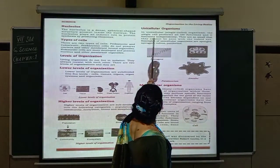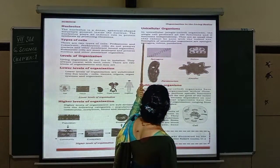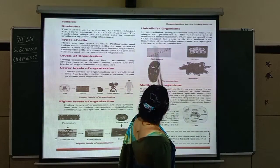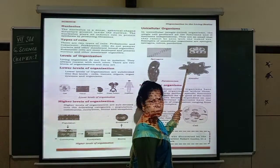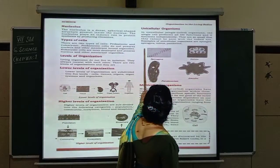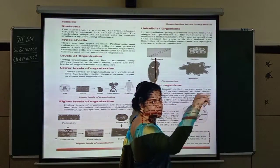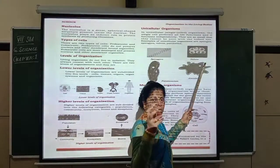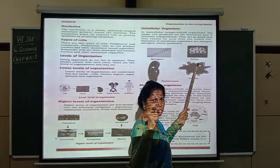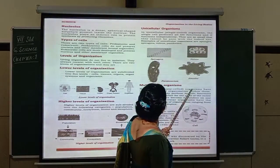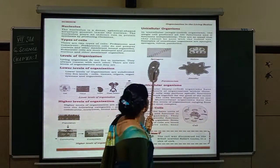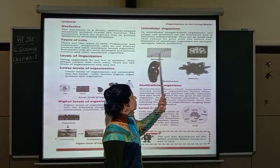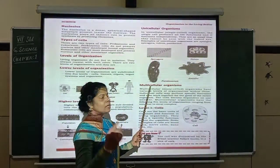The single cell only performs all the functions independently and cannot be seen with the naked eye. Examples of unicellular organisms are sponges — found in the ocean — spirogyra, which has a tape-like structure, volvox, which lives in colonies grouped together, pandorina, paramecia, and amoeba, which is a shapeless organism. These are all unicellular, meaning single-cell organisms.